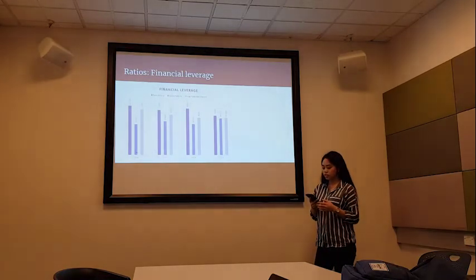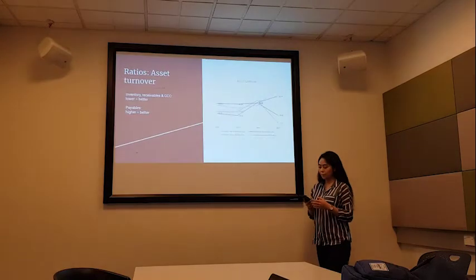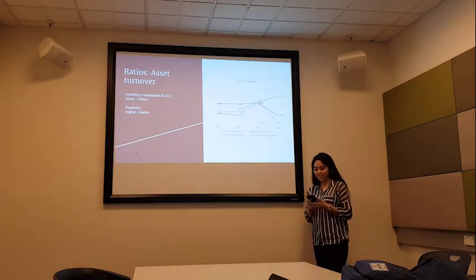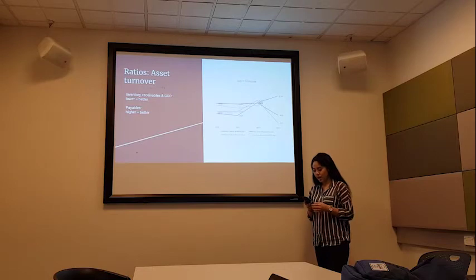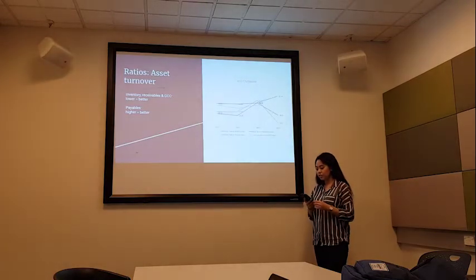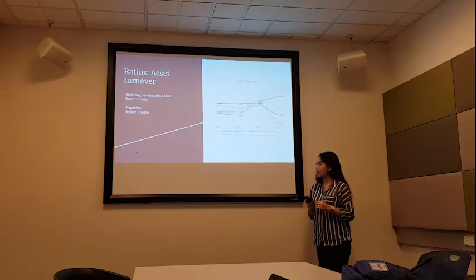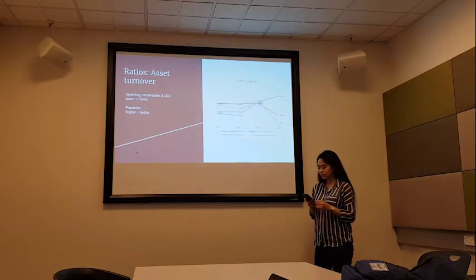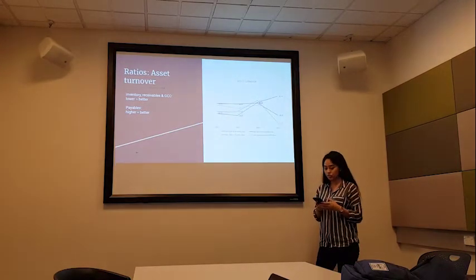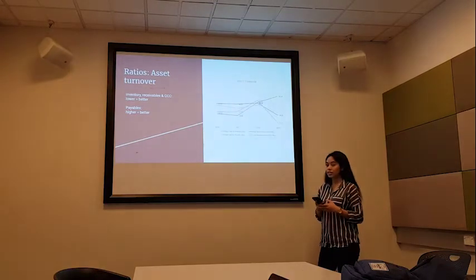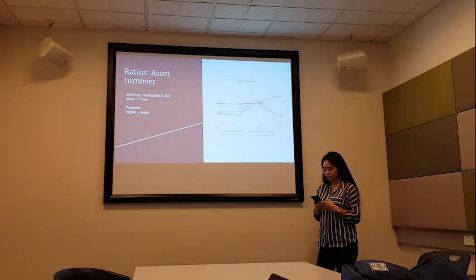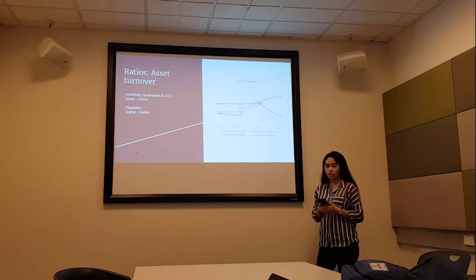Next, moving on to asset turnover, also known as efficiency ratios, which analyze how well a company uses its assets and liabilities internally. As shown in the graph, the days sales in inventory remain steady through 2014 and 2016, and declined in 2017, indicating that beta's inventory turnover has reduced. The days sales in receivables significantly increased in 2016 and declined again in 2017. This is a negative as it indicates that beta's receivables were collected at a higher frequency in 2016.